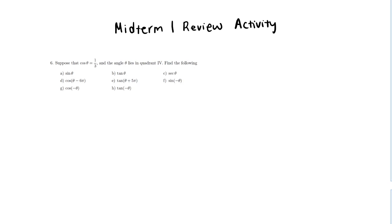This first problem is problem 6. We're given cosine of some angle — we're not given the angle itself, we're given that cosine of theta equals 1/3. We're also told that this angle theta lies in quadrant 4. We're asked to compute or evaluate some different trigonometric expressions at this angle theta. Cosine of theta tells us the x-coordinate of the point on the unit circle corresponding to theta.